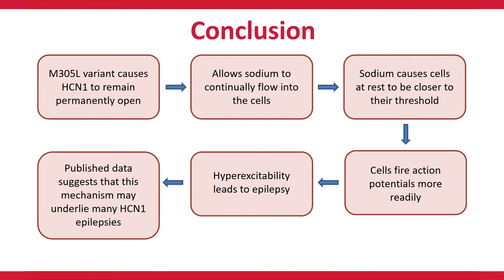So to conclude, we were able to determine how the HCN1 M305L variant is causing epilepsy. This variant causes HCN1 to remain permanently open, which allows sodium to continually flow into the cells. This sodium influx causes cells at rest to sit closer to their threshold, which means they fire action potentials more readily, and it is this hyperexcitability which causes the epilepsy. Excitingly, when we went back to published data in the literature, we found a similar pattern of effect in many other HCN1 epilepsy variants, suggesting that this cation or sodium leak might underlie many HCN1 epilepsies, not just those caused by the M305L variant.